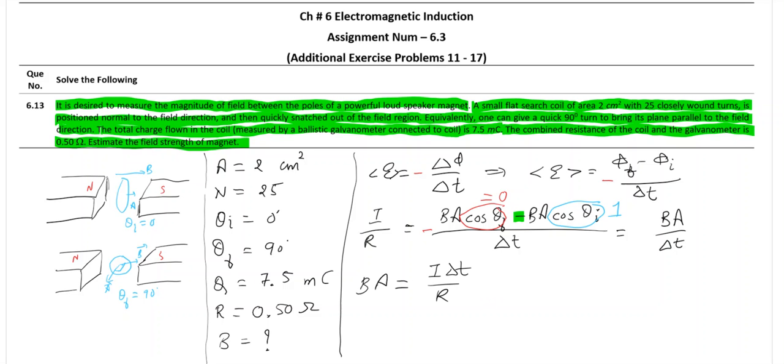So now I should be able to write this as B A is equal to I delta t by R. Now we know that current I is Q by t. So I into t is Q and hence I can write this as B is equal to Q by A R.